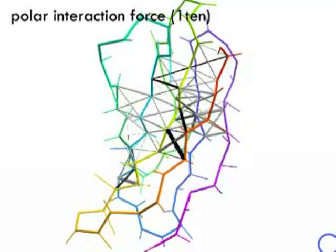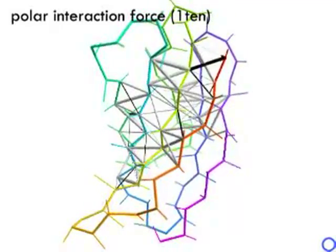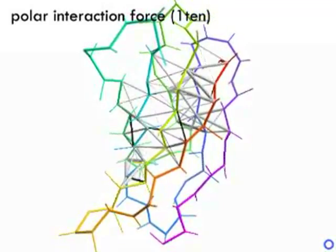Here we see a much larger 120 residue all-beta protein. The forces displayed here are the hydrogen bonds holding the strands in the sheet together.